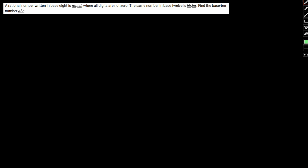A rational number written in base 8 is ab.cd where all the digits are non-zero. The same number when written in base 12 is bb.ba. Find the base 10 number abc.